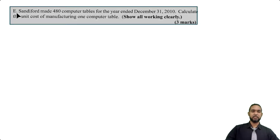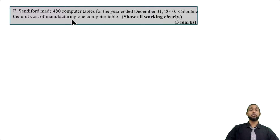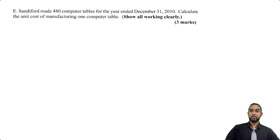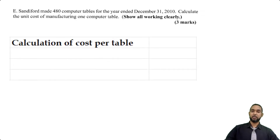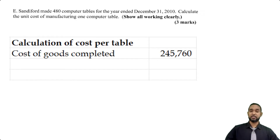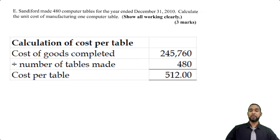Part C tells us that E. Sandiford made 480 computer tables for the year ended December 31st 2010, and asks us to calculate the unit cost of manufacturing one computer table. We take the total cost of production from the manufacturing account — $245,760 — and divide by the number of tables made, 480, giving us approximately $512 per table.